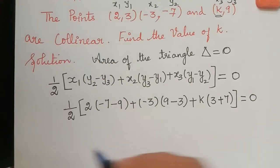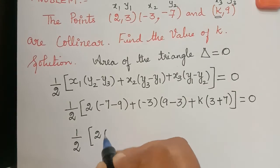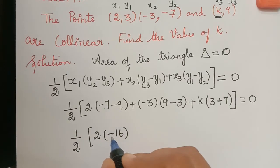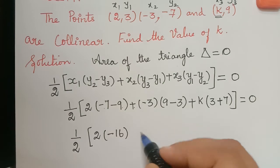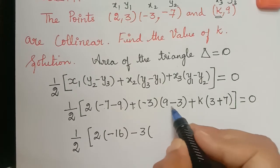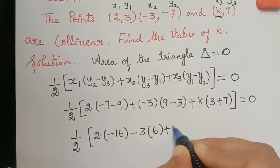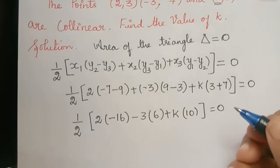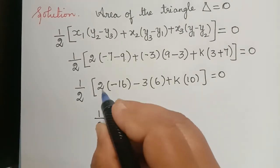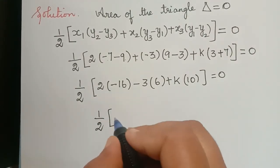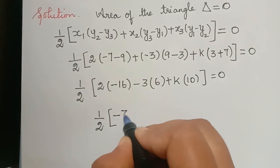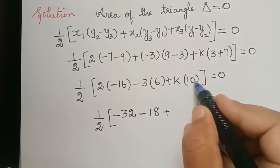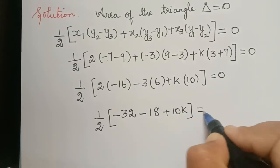Simplifying, we obtain 1/2 of: 2 multiplied with (-7 minus 9) which is -16; plus (-3) multiplied with (9 minus 3) which is 6; plus k multiplied with (3 plus 7) which is 10. This equals zero.